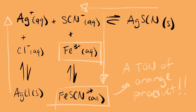Here we can see a demonstration of the intricate web of reversible reactions. If you have some type of common ion between each of your reactions, you are going to see some type of competition between all of these reversible reactions until some equilibrium is struck for each of them. This is a demonstration of the equilibrium principles in lab. The associated assignment is going to be due next Tuesday. If you have any questions, don't hesitate to let me know — until then, class is dismissed.